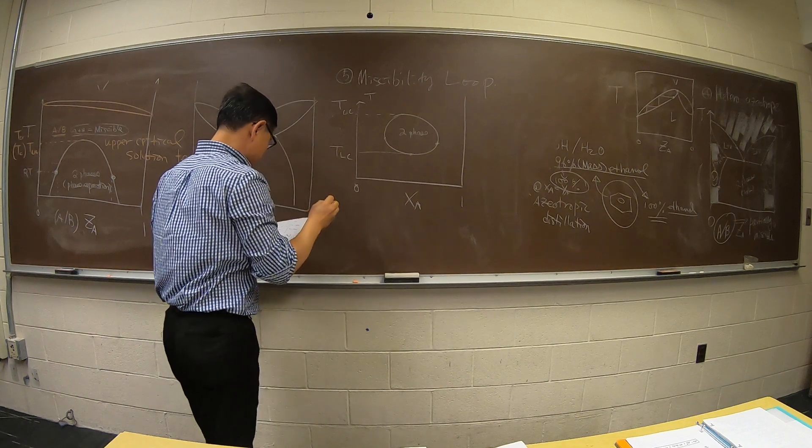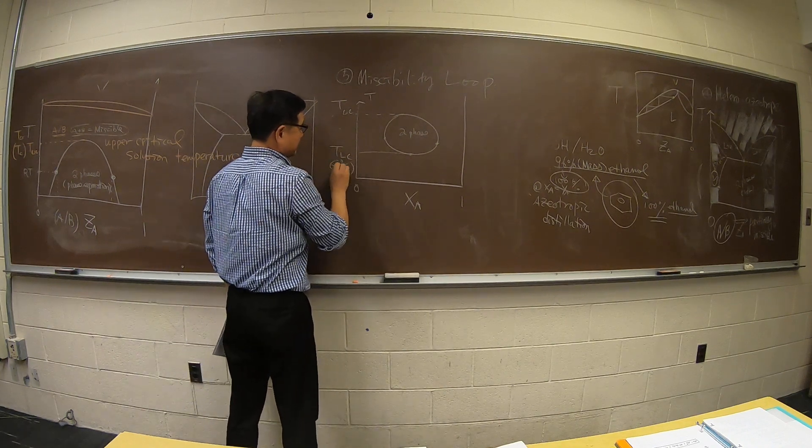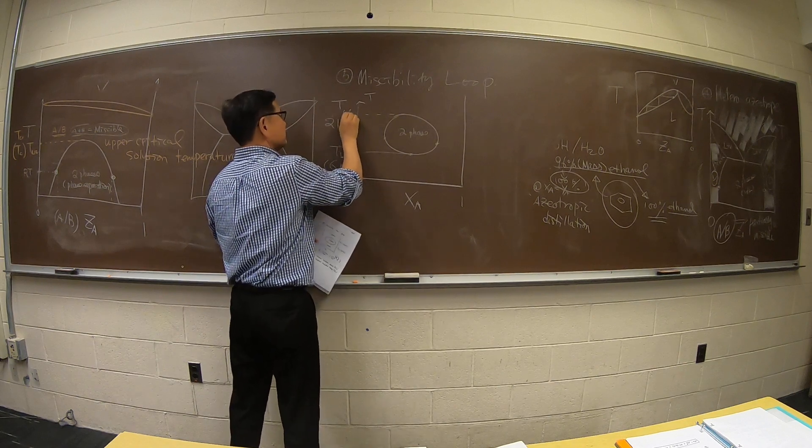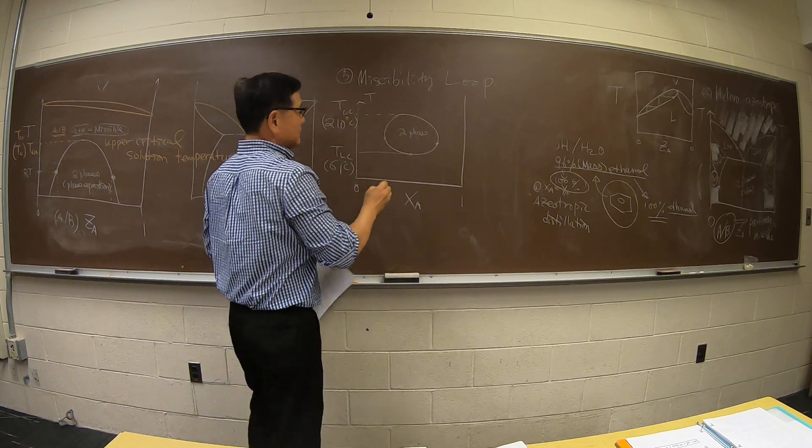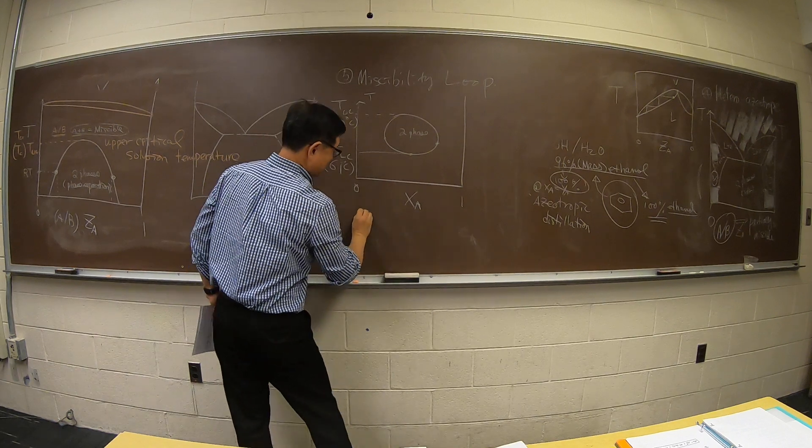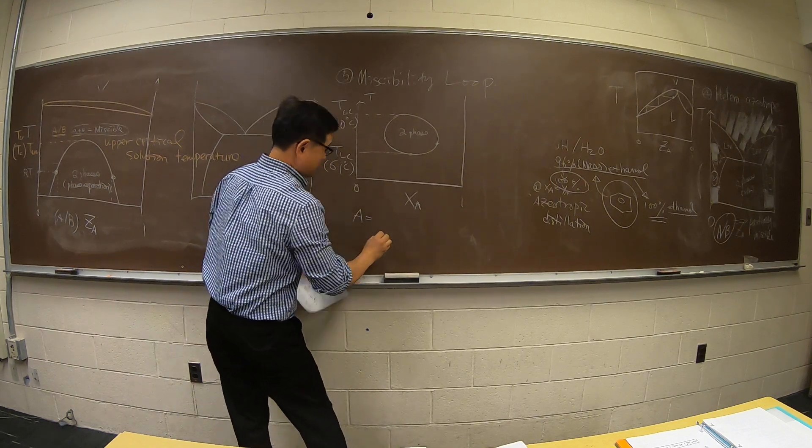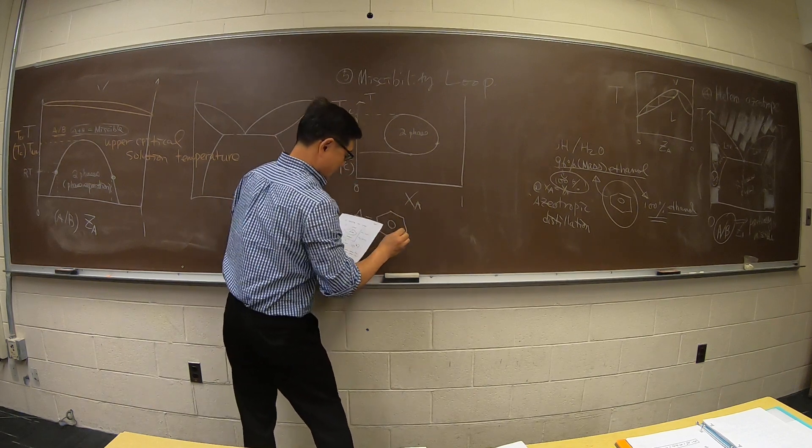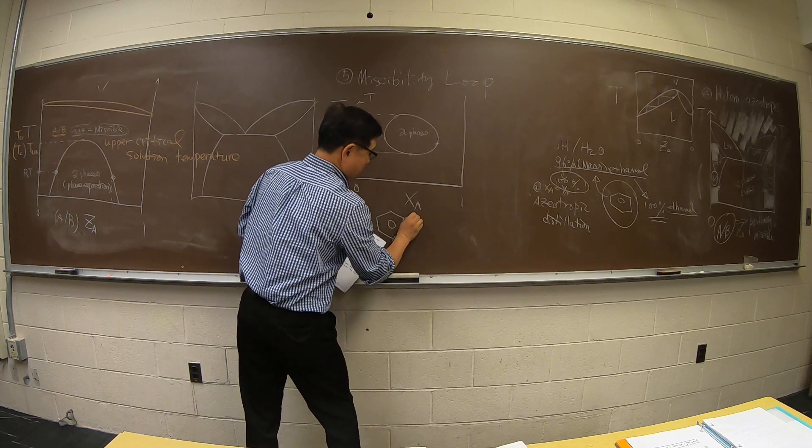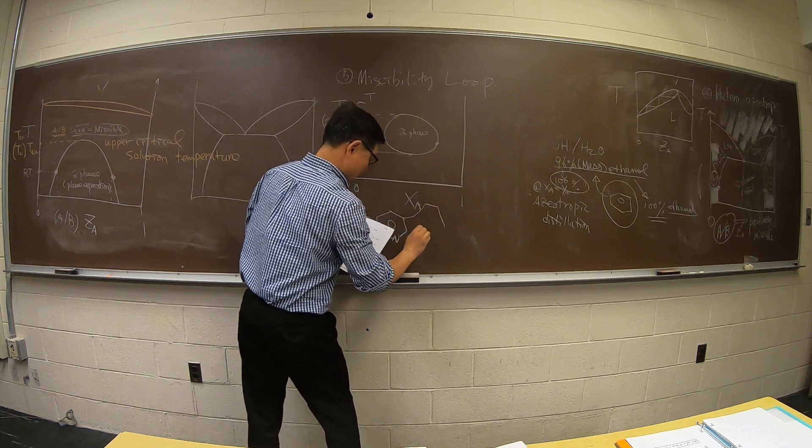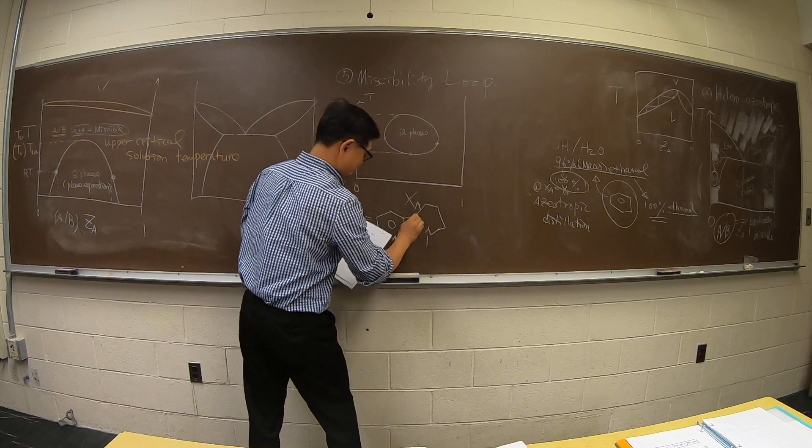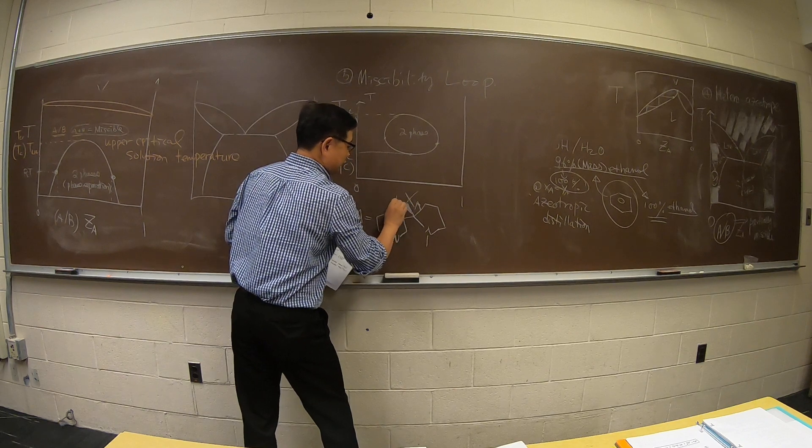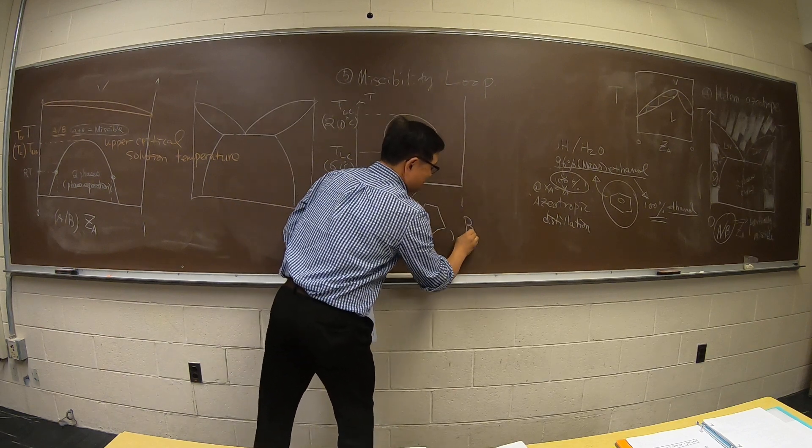And the lower critical temperature here is 61 degrees, and this is 210 degrees. This is 210 degrees for when A is nicotine. The lower critical temperature here is 60 degrees, and this one is water.